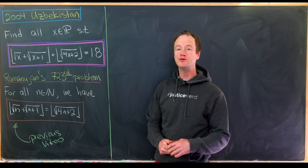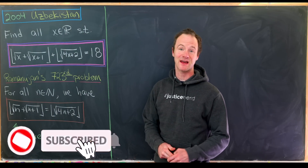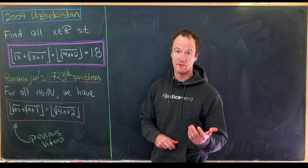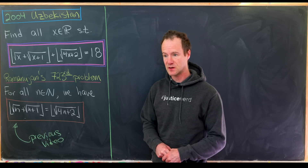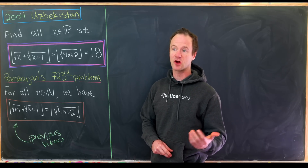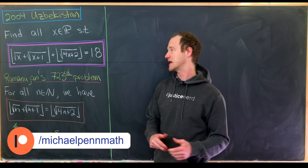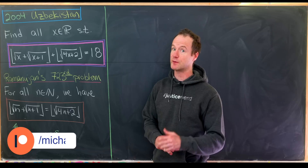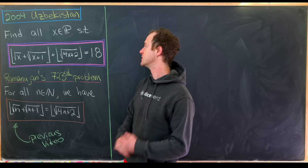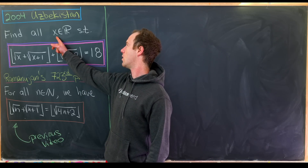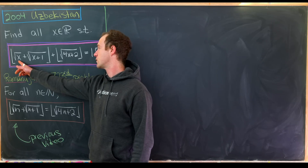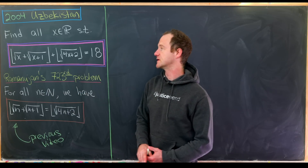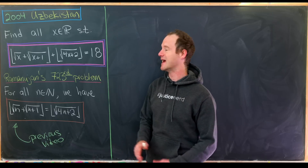Today we've got a nice problem from the 2004 Uzbekistan Math Olympiad, and there are a couple of things I like about this problem. One, it involves my favorite function — the floor function — and another thing is that it calls back to a previous video I did which I liked quite a bit. So let's look at the problem first. Our goal is to find all real numbers x such that the floor of the square root of x plus the square root of x plus 1, plus the floor of the square root of 4x plus 2, is equal to 18.